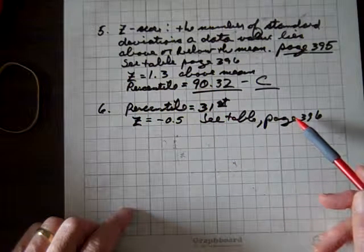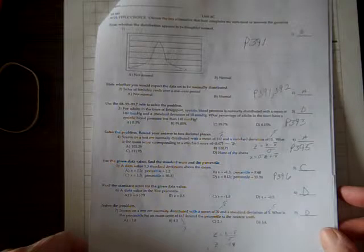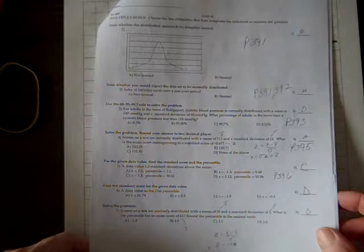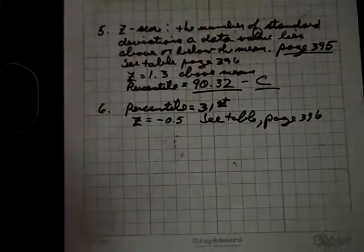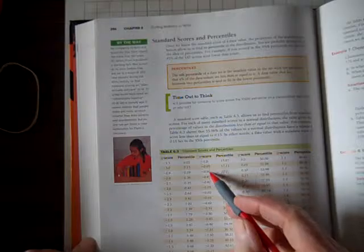Now for 6, we are given a percentile, and we have to find the corresponding Z score. So we'll go back to the table. We'll go to the 31st percentile.